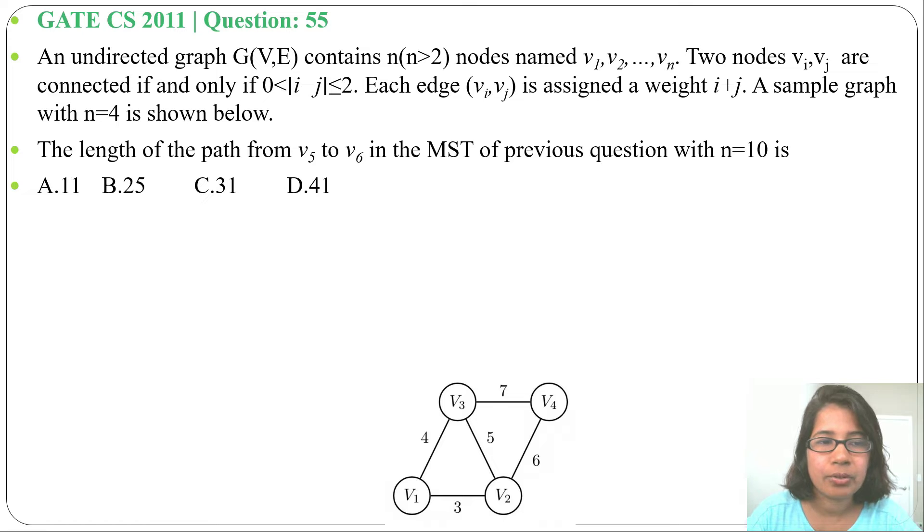A simple graph with n equals 4 is shown below. This is the graph. The length of the path from v5 to v6 in the MST of previous question with n equals 10 is, and 4 options are given.